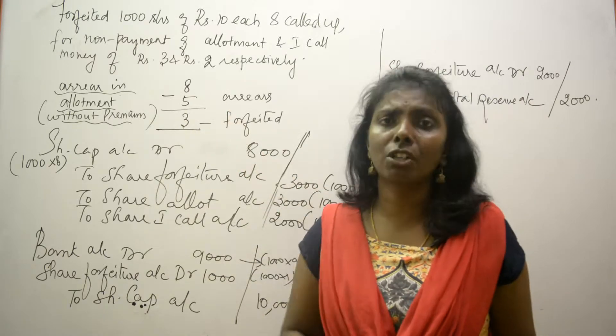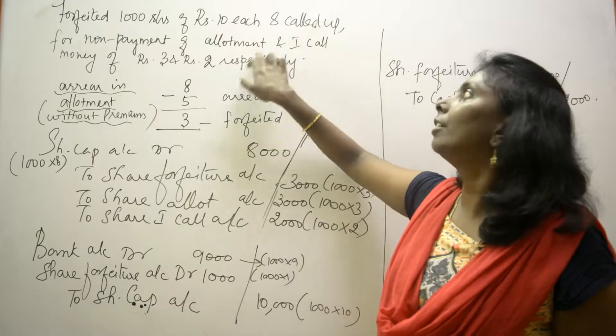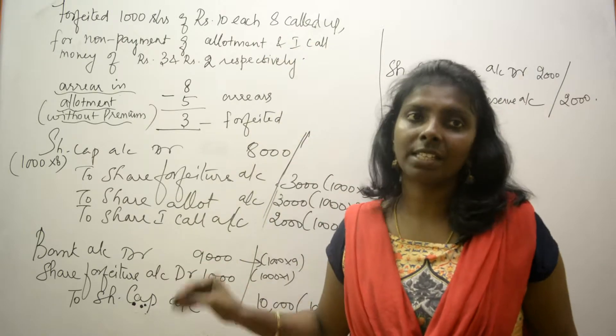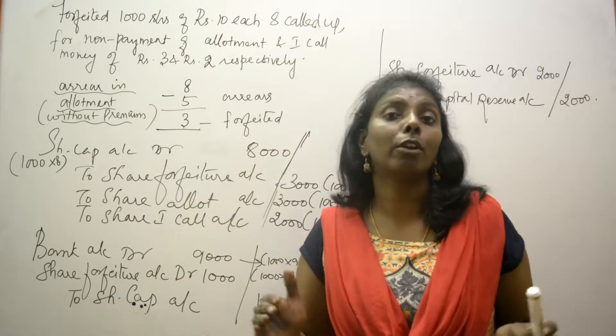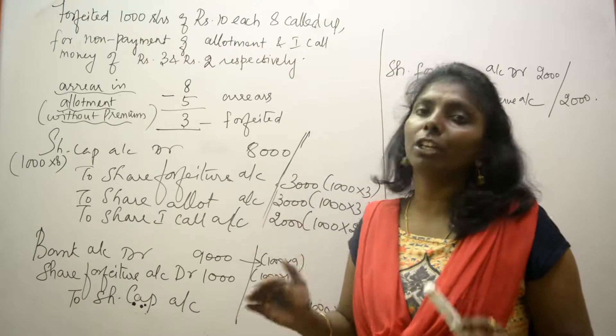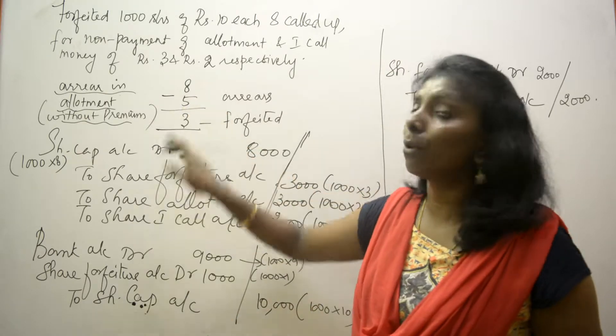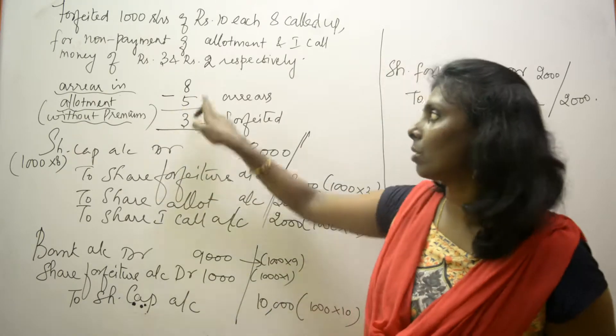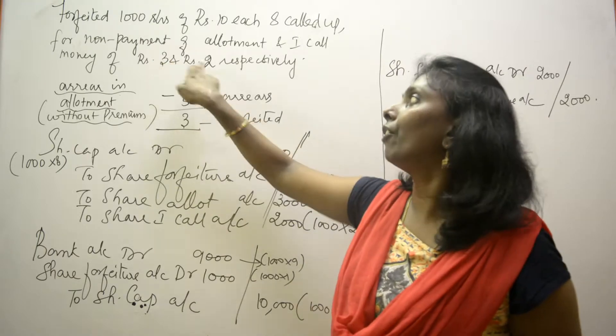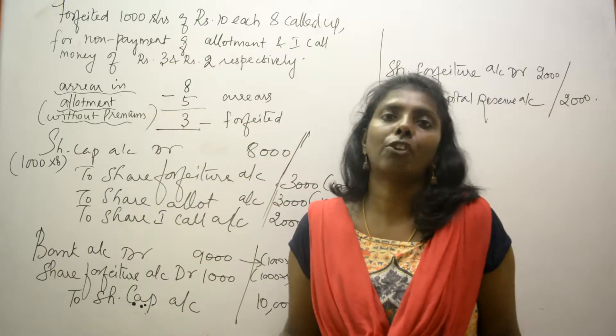At this point of time, the company has called up only rupees 8, so you are supposed to receive only 8. Take that 8. How much did I not receive? Non-payment means I've not received, so you did not receive total of 5.